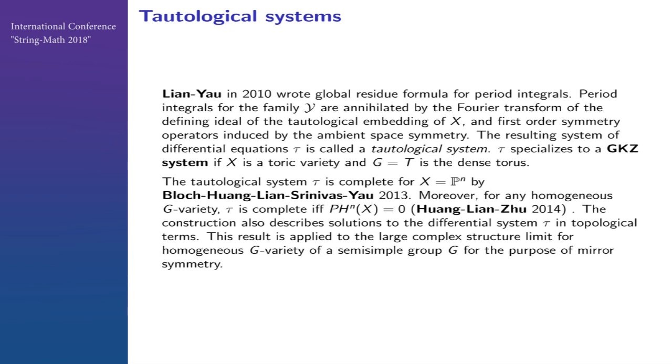When the group is a torus, that means it becomes a toric variety, then the system reduces to the GKZ system. But these things are far beyond toric varieties. This system is complete—that means all solutions are periods. For any homogeneous G variety, the ambient manifold would be a G variety with big group G acting, and this system is complete. This gives you a lot of efficient calculations for such periods.